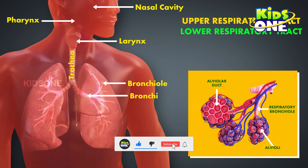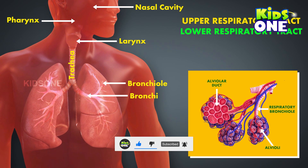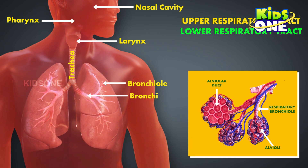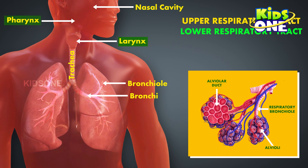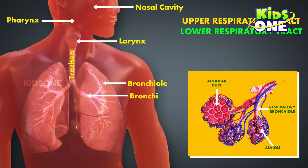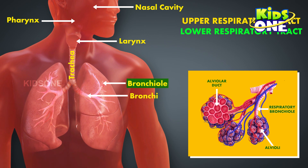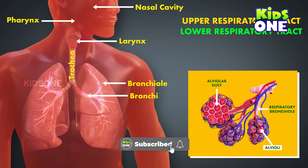The respiratory system can also be divided into the upper and the lower respiratory tracts. The upper respiratory tract consists of structures in the head and neck — in other words, the nose, the pharynx, and the larynx. The lower respiratory tract is located in the chest and includes the trachea, the bronchi, the bronchioles, the alveolar ducts, and the alveoli.